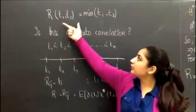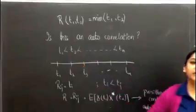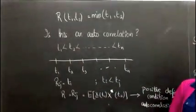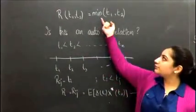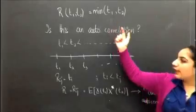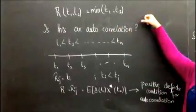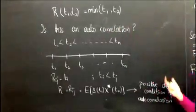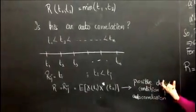For a given function in terms of t1 and t2, we have to find whether this function is an autocorrelation function or not. The given function is min(t1, t2). To find out whether it's an autocorrelation function or not, we'll have to prove if it has a positive definite or not.